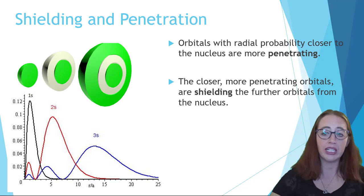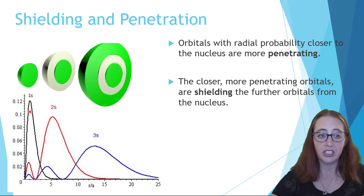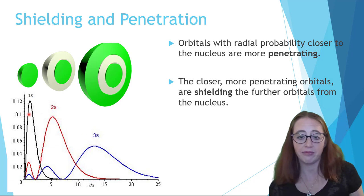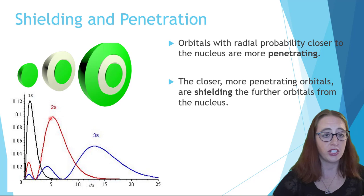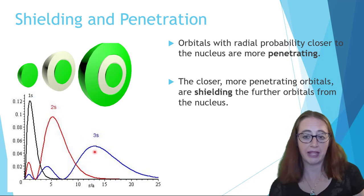So if we look at our three orbitals here, the 1s orbital shields the 2s and 3s because it is more penetrating. The 2s shields the 3s because it is more penetrating.